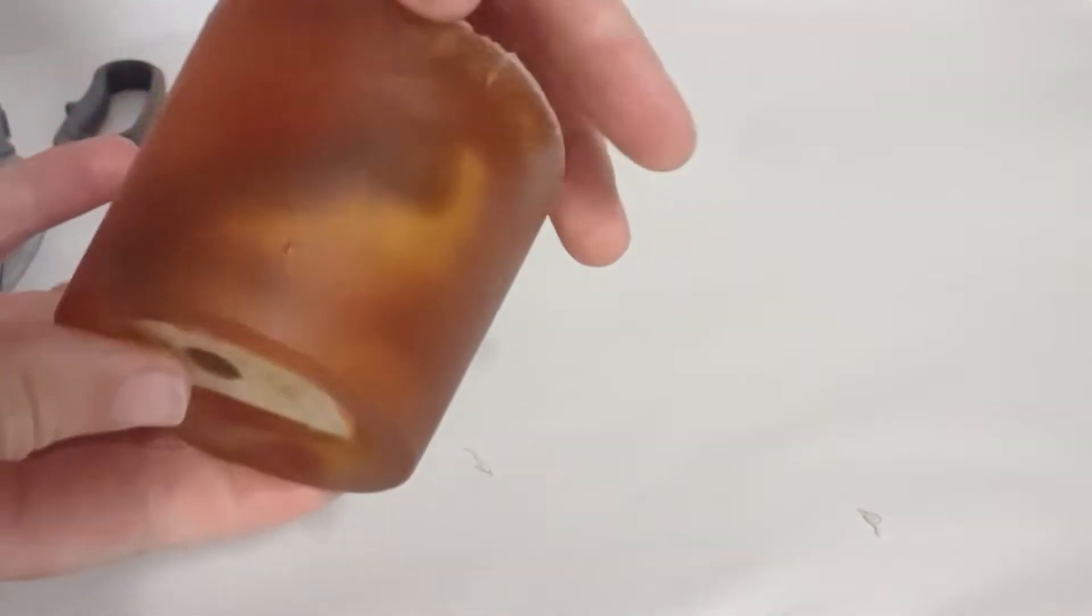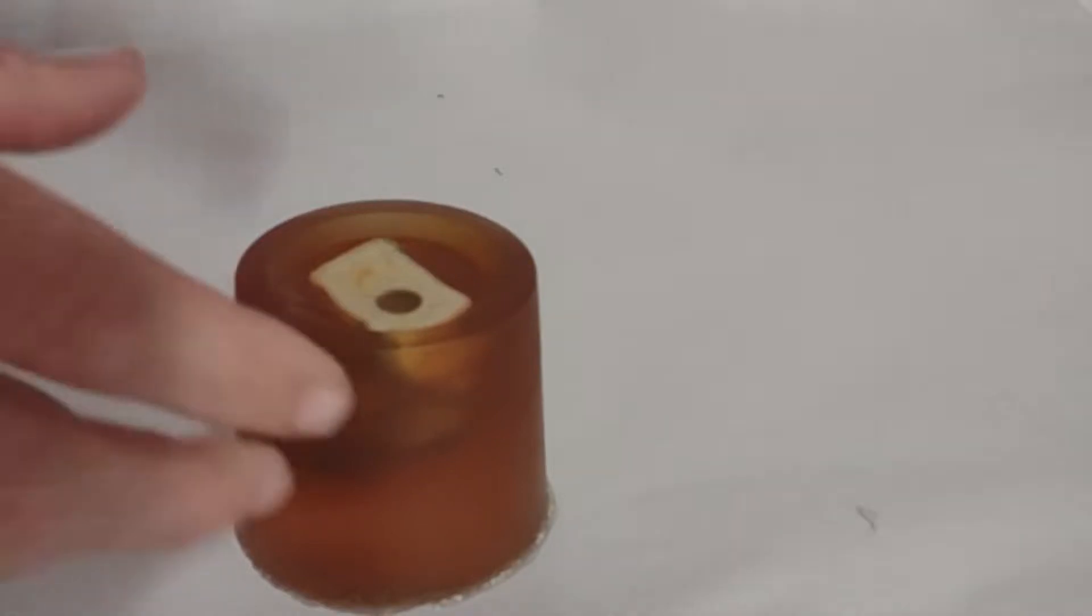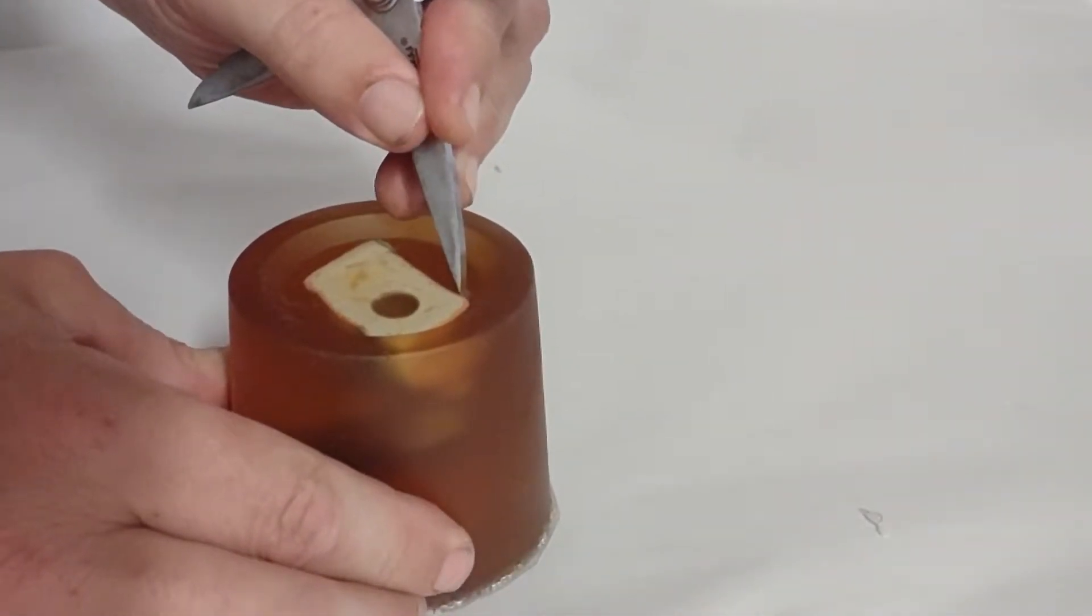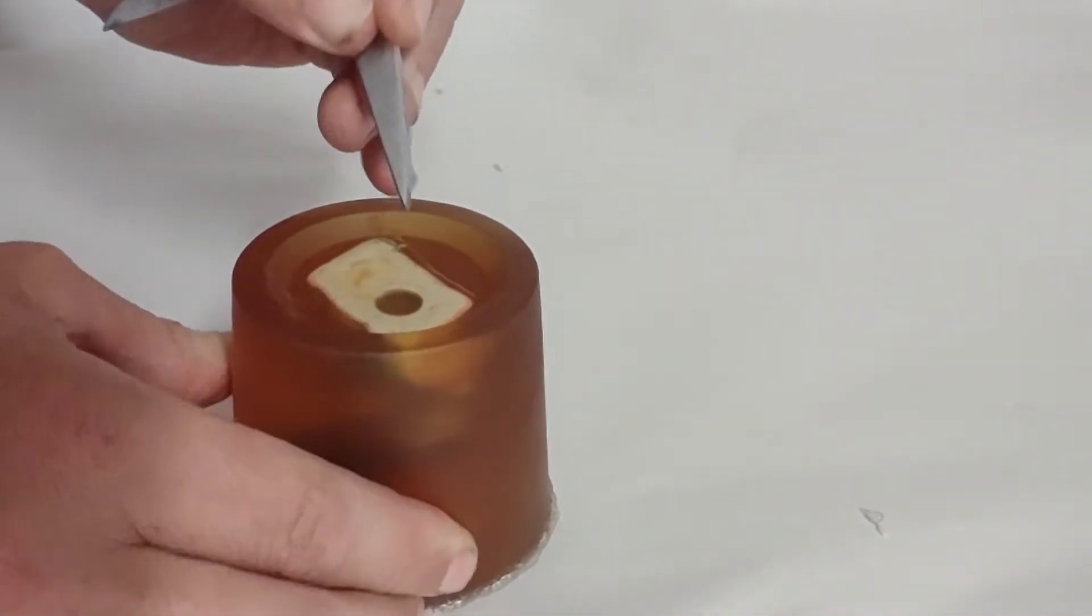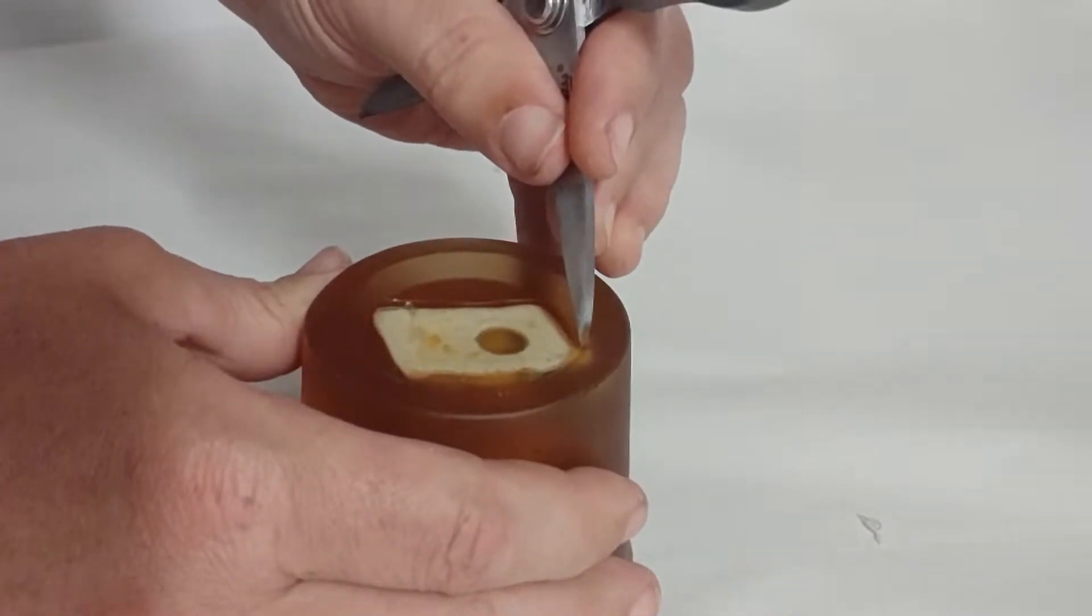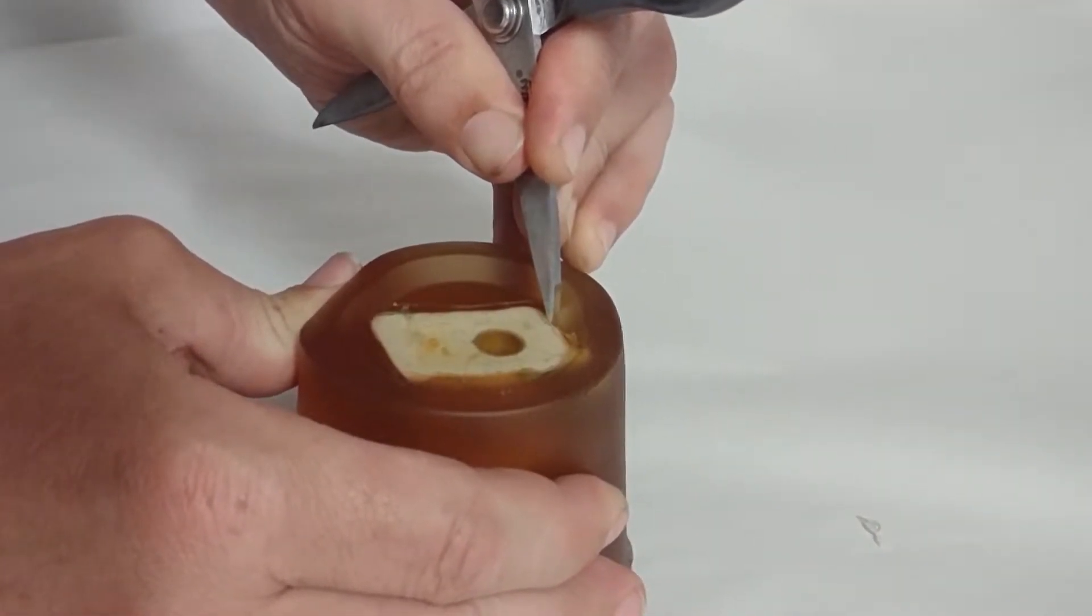But first let's remove our original master object from the Composite Mold mold. I am going to clean up the edges a little bit with some scissors and then I am just going to pop the figure out.